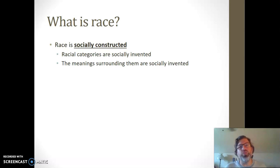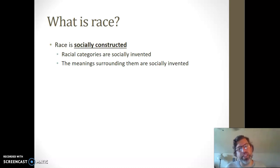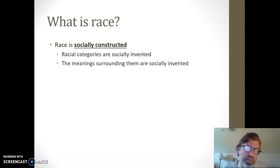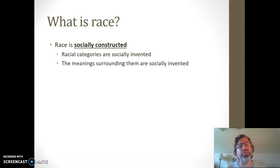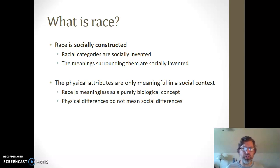The meanings — what it means to be black or white or inside of some particular racial group, and the differences we make about being in one group or another — all of that is socially invented as well. Those are socially produced, part of our socially constructed reality. They don't exist in nature; we are producing them socially.